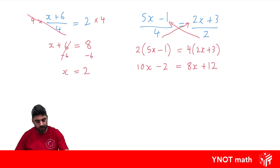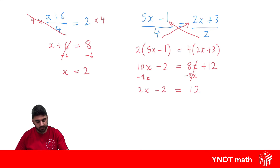Now we want to bring our pronumerals together. I like taking the smaller one over to the bigger one — 8x is smaller, so we minus 8x from both sides. 8x minus 8x cancels, and 10x minus 8x is 2x. We still have minus 2 and 12.